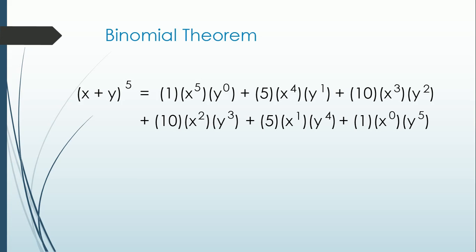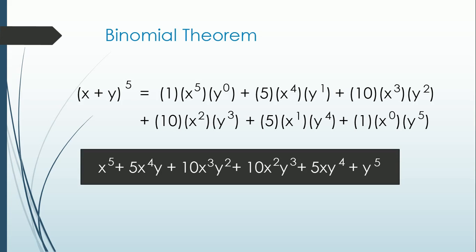And for the last term: 0 degree of x, 5 degree of y, and for the constant, 5 times 1 over 5 is equal to 1. Simplify the answer and it will become x raised to 5 plus 5x raised to 4 y plus 10x raised to 3 y raised to 2 plus 10x raised to 2 y raised to 3 plus 5xy raised to 4 plus y raised to 5.